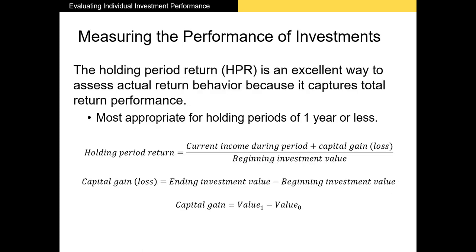How do we actually measure the performance of our portfolio? It's the same way we've been doing it all along. We measure our performance using a holding period return — we take our current income, so our dividends, plus our capital gains, and divide that by our beginning value of our investment. You can also calculate it as price at the end minus price at the beginning plus any income over the period divided by the price at the beginning. Those are the two primary ways to calculate holding period return. Capital gain is just the difference between the ending and beginning value.